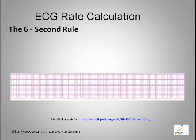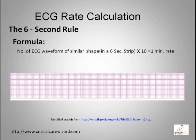The six-second rule is beneficial for a slower heart rate. To calculate the one-minute heart rate, count the similar ECG waveforms located in a six-second ECG strip, then multiply by 10. The resulting sum is your one-minute heart rate.